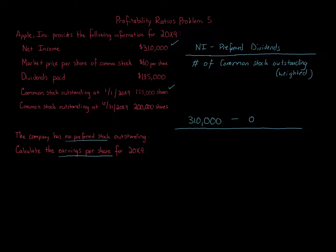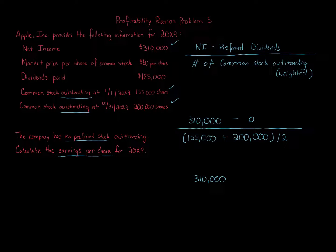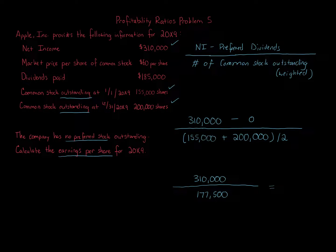We're given two amounts: 155,000 shares and 200,000 shares, so we have to average those two numbers together. Keep in mind that we use outstanding shares — both numbers here are outstanding shares, beginning of the year and ending of the year. If you were given issued or authorized shares, we ignore those; we use outstanding shares only. So we have $310,000 as the numerator. The denominator calculation gives us 177,500 shares — that is our weighted average.